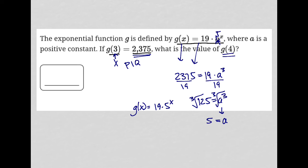Okay, so the question really is, what is g(4)? So now I'm just replacing x with 4. So g(4) = 19·5^4.